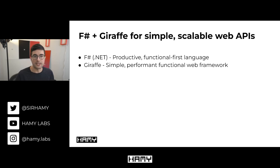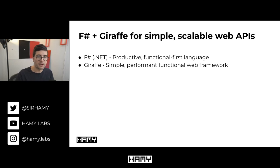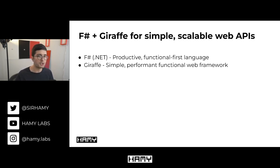F-sharp and Giraffe are great choices for simple, scalable web APIs. F-sharp runs on the .NET runtime which is shared by C-sharp. It's a very productive, functional-first language with static typing and all sorts of good stuff. Giraffe is one of the most popular web frameworks available for F-sharp. It's very simple, very performant, and it allows you to write web servers and services functionally.